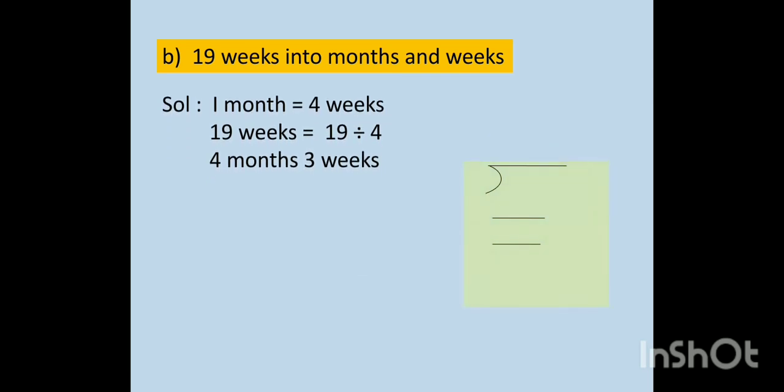Now, next question. Convert 19 weeks into months and weeks. We know 1 month is equal to 4 weeks. So 19 weeks is equal to 19 divided by 4. Because week is a smaller unit, month is a bigger unit. When we will divide 19 by 4, we will get quotient 4 and remainder 3. So our answer is 4 months 3 weeks. Quotient will become month and remainder will become weeks.